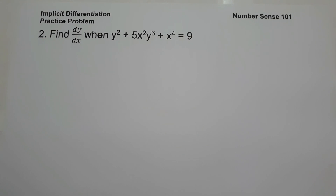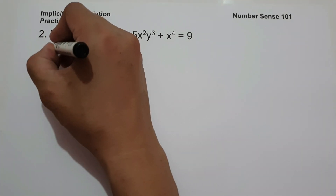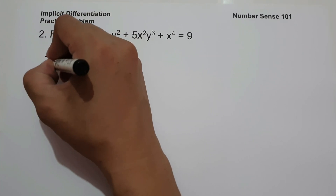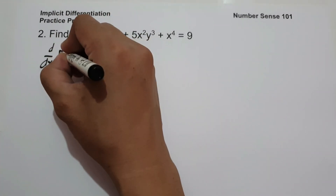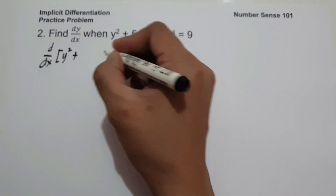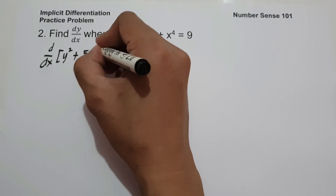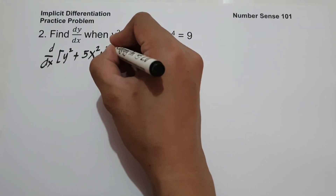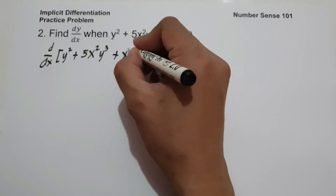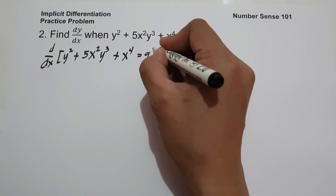On number 2, find dy over dx when y squared plus 5x squared y cubed plus x raised to 4 equals 9. To find the value of dy over dx, let us differentiate both sides of the equation: d over dx of y squared plus 5x squared y cubed plus x raised to 4 equals 9.